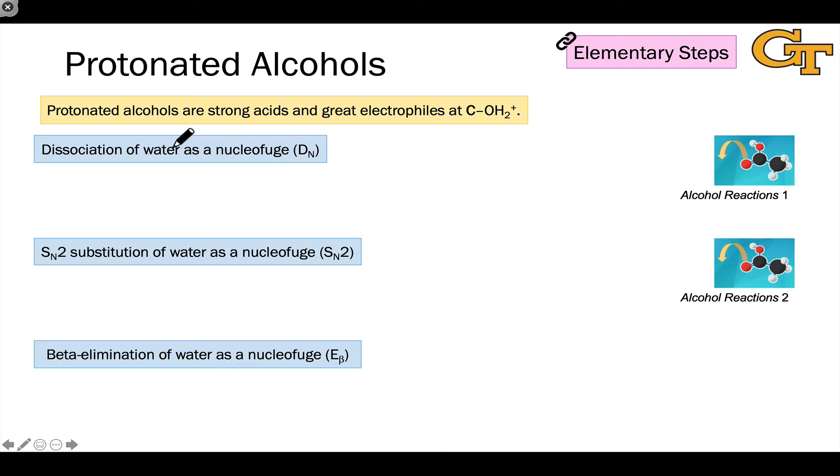Protonated alcohols are the conjugate acids of neutral alcohols, and these are strong Bronsted acids as well as strong Lewis acids. They're great electrophiles at the carbon linked to the positively charged OH2 plus group.